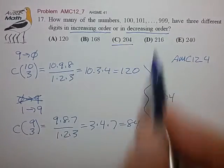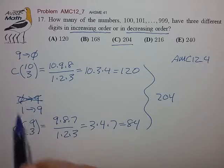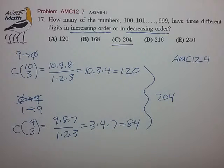Anyway, fairly simple if you break it up into two cases and you realize that you cannot have a zero as a leading digit in a three-digit number. And if you need a little more explanation as to why we do it that way, check out problem AMC 12 underscore four. See you next time. Bye-bye.